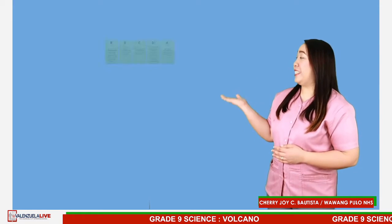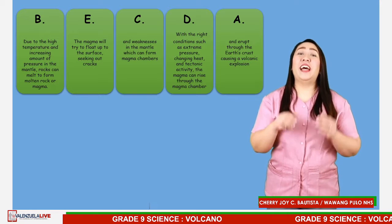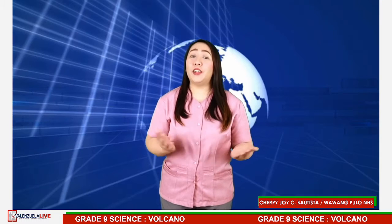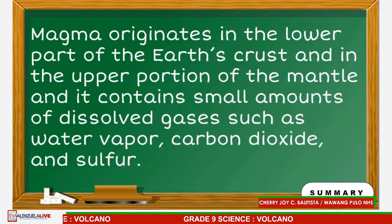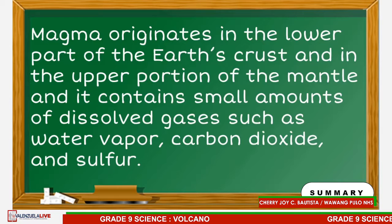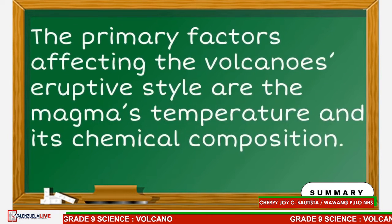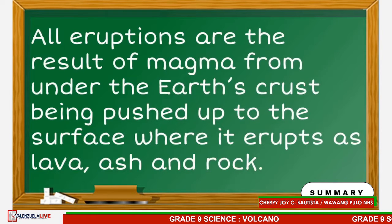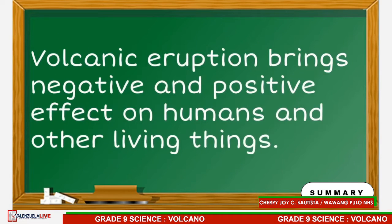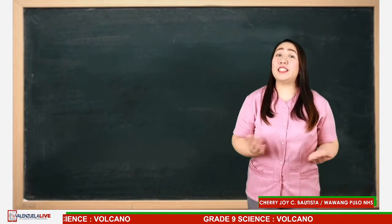The correct answer — did you get it right? Amazing, Grade 9 students! Here are the key points of our lesson today: Magma originates in the lower part of the Earth's crust and in the upper portion of the mantle, and it contains small amounts of dissolved gases such as water vapor, carbon dioxide, and sulfur. The primary factors affecting the volcano's eruptive style are the magma's temperature and its chemical composition. All eruptions are the result of magma from under the Earth's crust being pushed up to the surface, where it erupts as lava, ash, and rock. Volcanic eruption brings both negative and positive effects on humans and other living things.